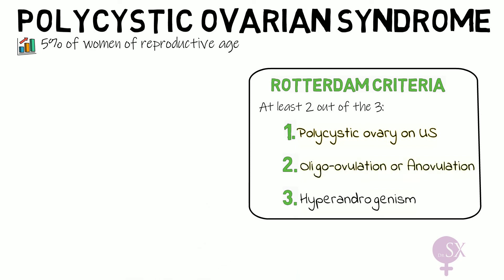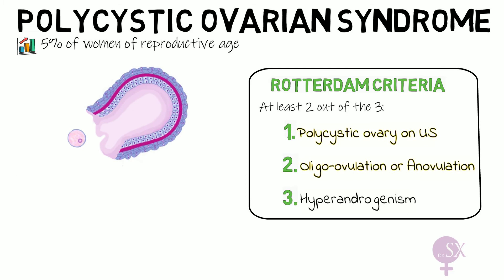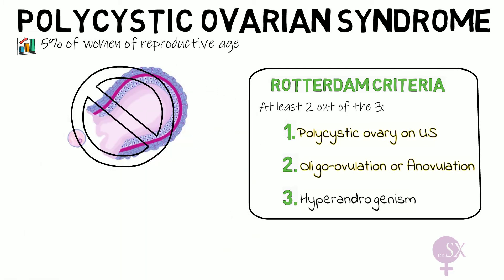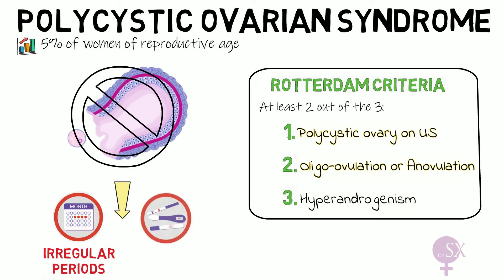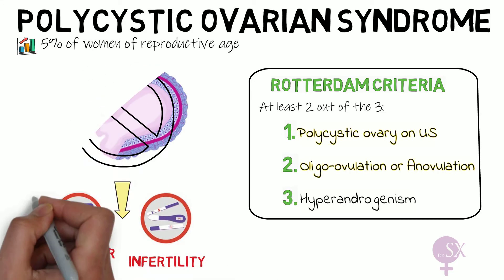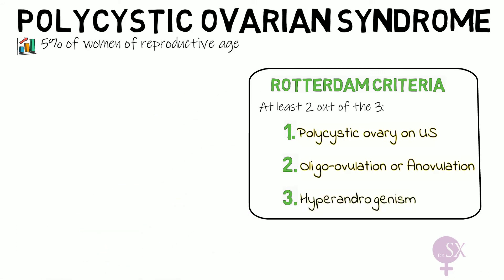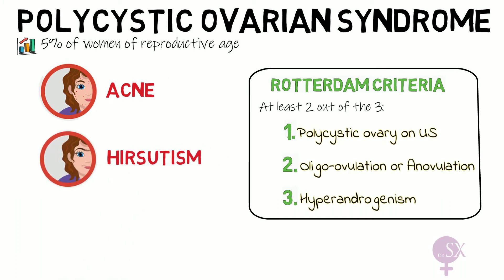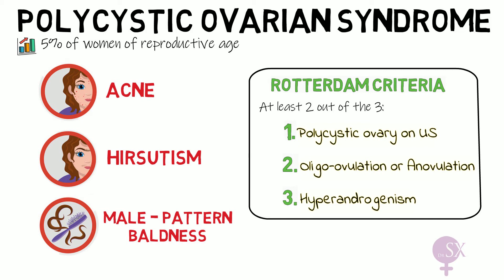Next, oligovulation or anovulation: in PCOS, ovulation does not occur (anovulation) or occurs infrequently (oligovulation). Essentially, these patients will have irregular periods and may suffer from infertility. We also have hyperandrogenism — high androgen levels will result in the patient having acne, hirsutism (which is excessive growth of dark coarse hair in a male-like pattern), and male pattern baldness.